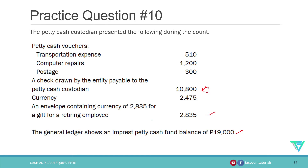For the petty cash accounted, we consider the petty cash vouchers, the replenishment check, the currency, and the envelope containing currency — but only if it is intact. We will not consider it if it is not intact.